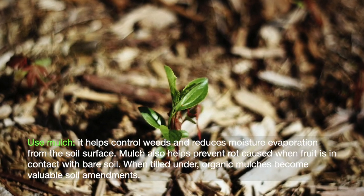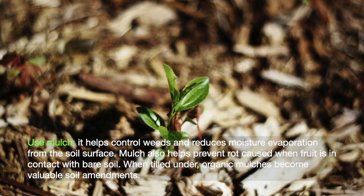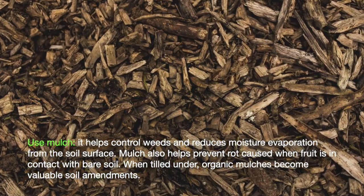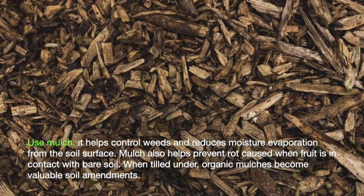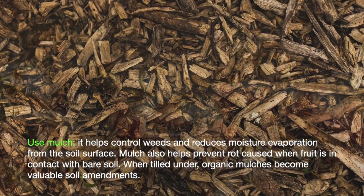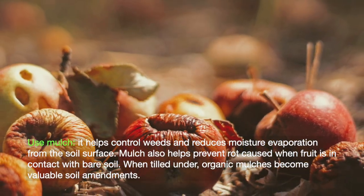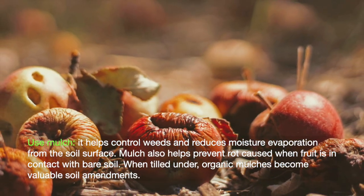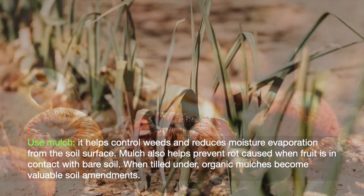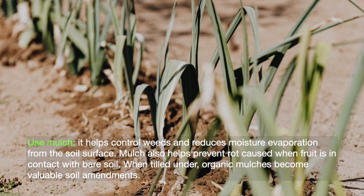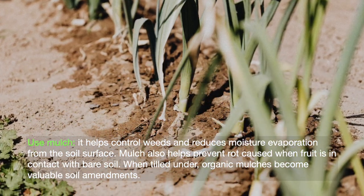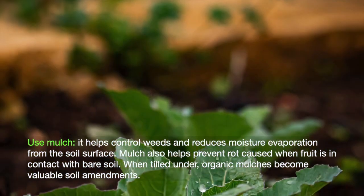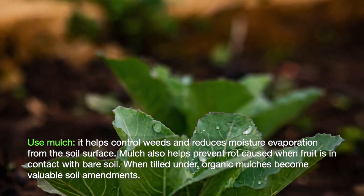Mulch helps control weeds and reduces moisture evaporation from the soil surface. Mulch also helps prevent rot caused when fruit is in contact with bare soil. When tilled under, organic mulches become valuable soil amendments.